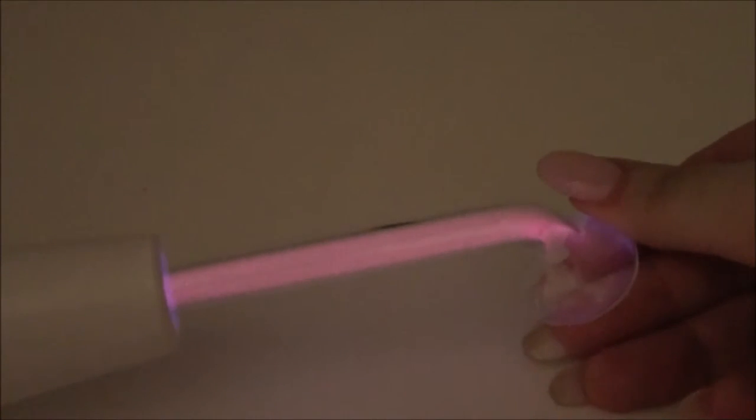To see the glow, turn off the lights in your room. When I remove my hand from the tip of the electrode, the glow fades.